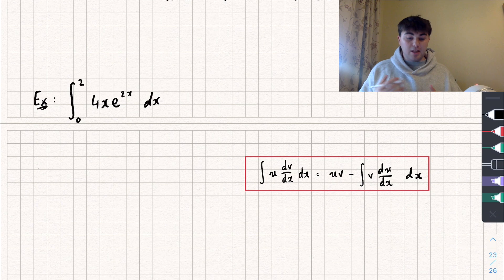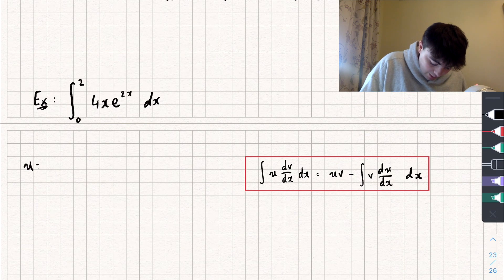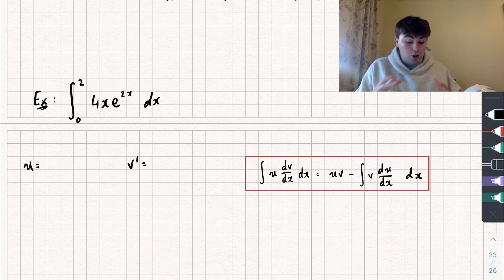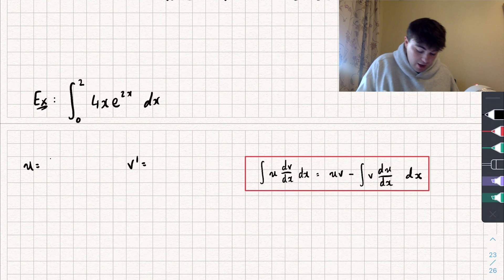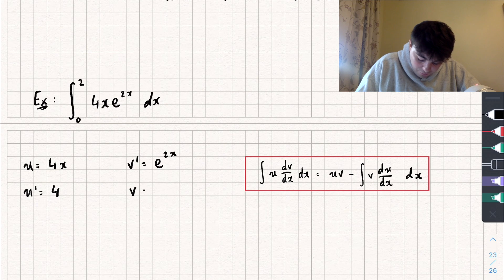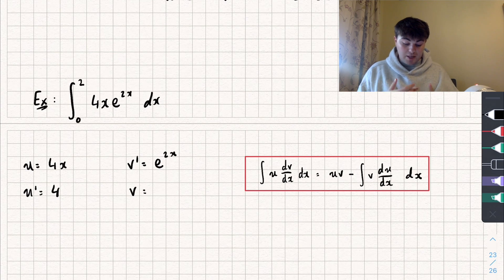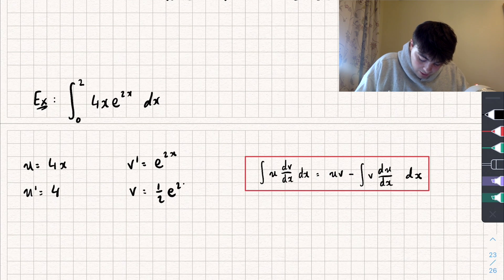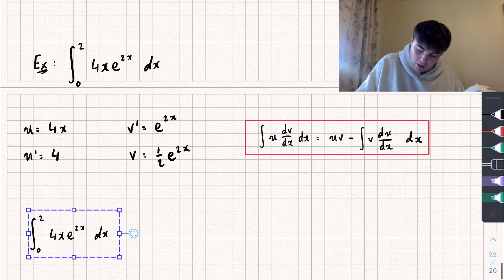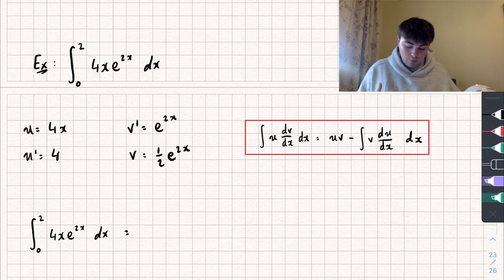In this final example we have the definite integral between the limits of zero and two of 4x multiplied by e to the power of 2x. We're going to label up u and v'. It's always good to have u as whatever is nicer to differentiate — I think 4x looks nicer after differentiation than e to the power of 2x — so u is going to be 4x and v' is going to be e to the power of 2x.